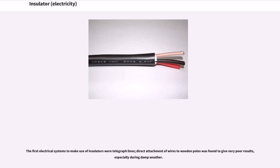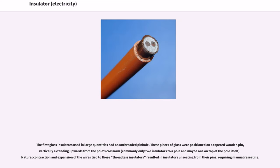The first electrical systems to make use of insulators were telegraph lines. Direct attachment of wires to wooden poles was found to give very poor results, especially during damp weather. The first glass insulators used in large quantities had an unthreaded pinhole. These pieces of glass were positioned on a tapered wooden pin, vertically extending upwards from the pole's crossarm. Natural contraction and expansion of the wires tied to these threadless insulators resulted in insulators unseating from their pins, requiring manual reseating.